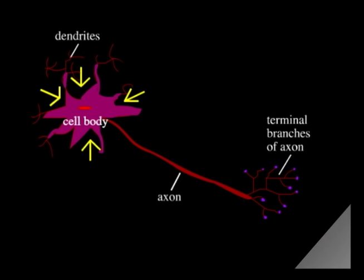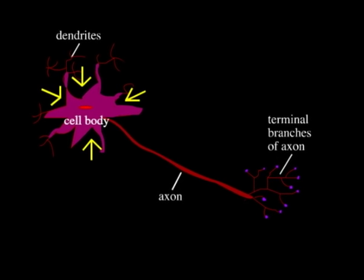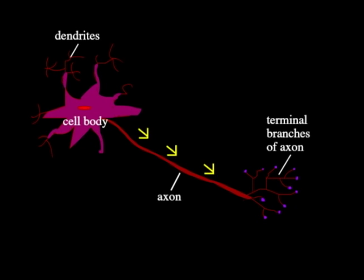How do neurons communicate? After the dendrites receive a synaptic input, an action potential is initiated. The signal travels rapidly through the axon, arriving at the terminal branches of the axon.